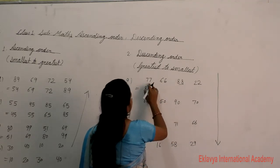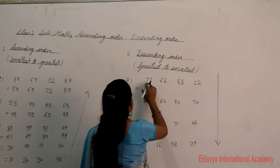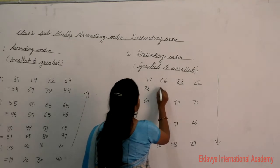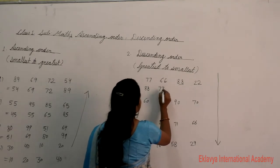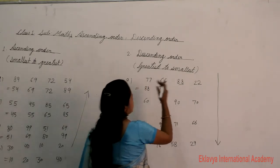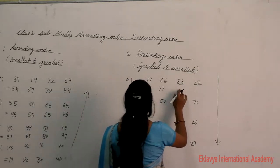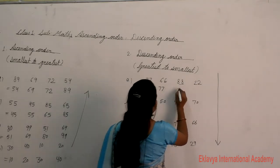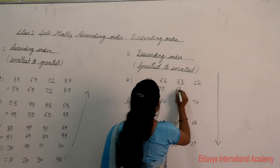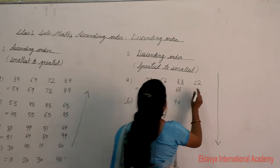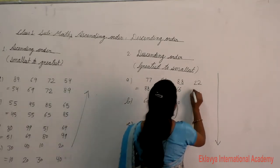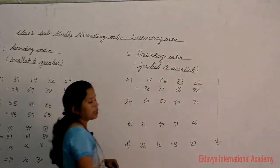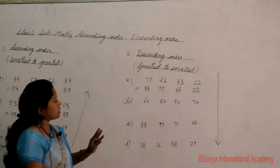After 88, the next smallest is 77, then 66, and then 22. That's the descending order for 77, 66, 88, and 22.